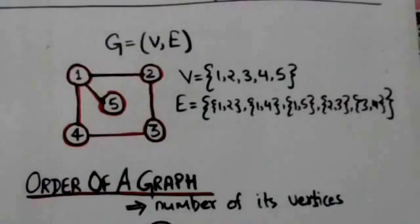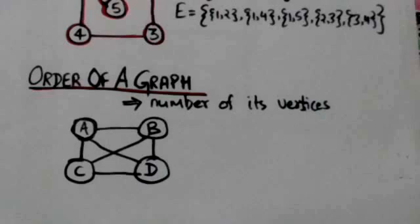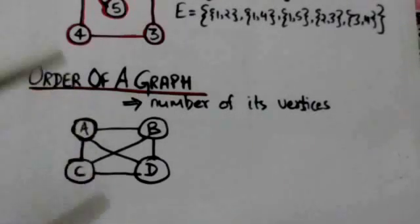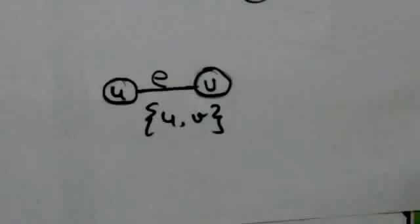The order of a graph is the number of its vertices. For example, the order of this graph is 4 because it has 4 vertices. If U and V are two vertices of a graph and the unordered pair UV is an edge denoted by E, then we can say E joins U and V.